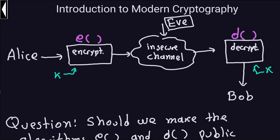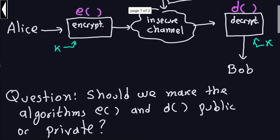Should we make the algorithms e() and d() public or private? So what I mean by that is, suppose we want to create some crypto system. Do we publish the encryption and decryption algorithms? I don't mean the keys—the keys should be private. I mean the algorithms, the inner workings of the algorithm of encryption and the inner workings of the algorithm of decryption.